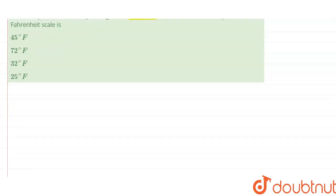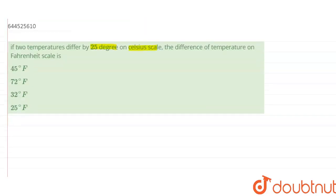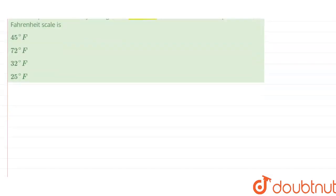So the relation between the Fahrenheit temperature and Celsius temperature is given by the equation which is written as Tc/100 equals to Tf minus 32 upon 180, where Tf is the temperature at Fahrenheit scale and Tc is the temperature at Celsius scale. Or in other terms, I can write this equation as Tf equals to 9/5 times Tc plus 32.